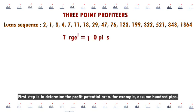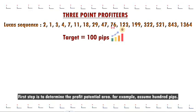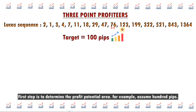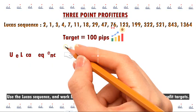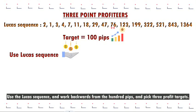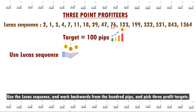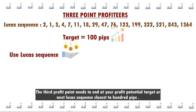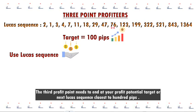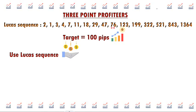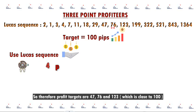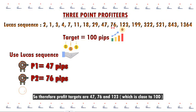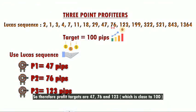The first step is to determine the profit potential area. For example, assume 100 pips. Use the Lucas sequence and work backwards from the 100 pips to pick three profit targets. The third profit point needs to end at your profit potential target or the next Lucas sequence number closest to 100 pips. So therefore the profit targets are 47, 76, and 123, which is closest to 100.